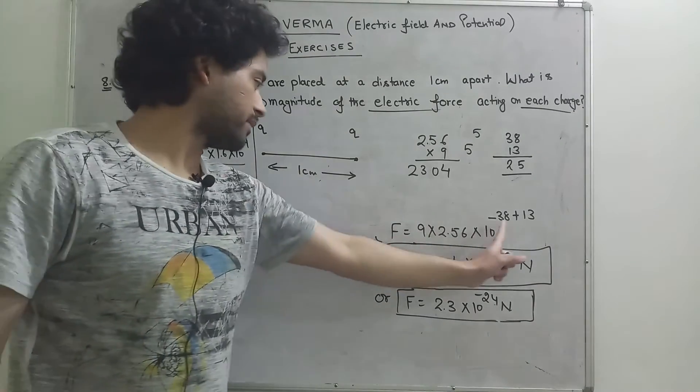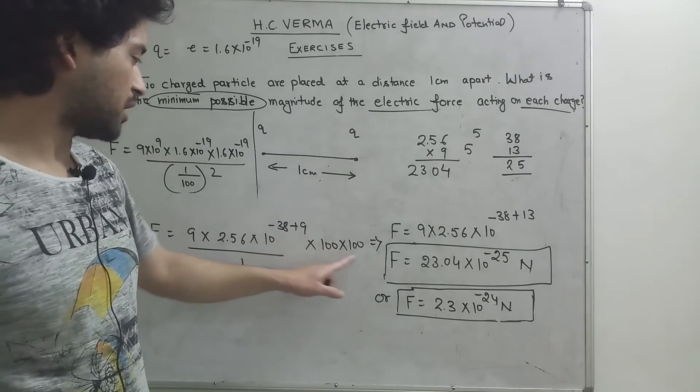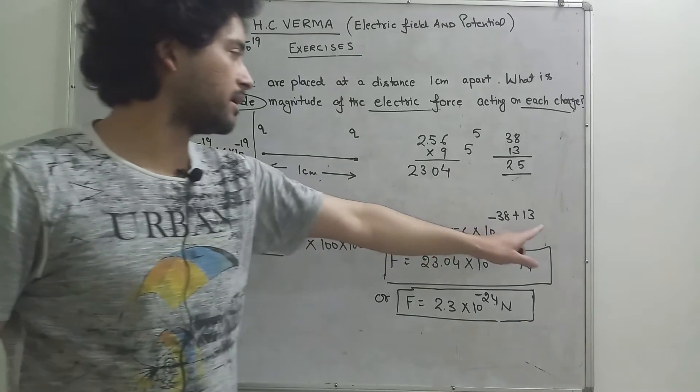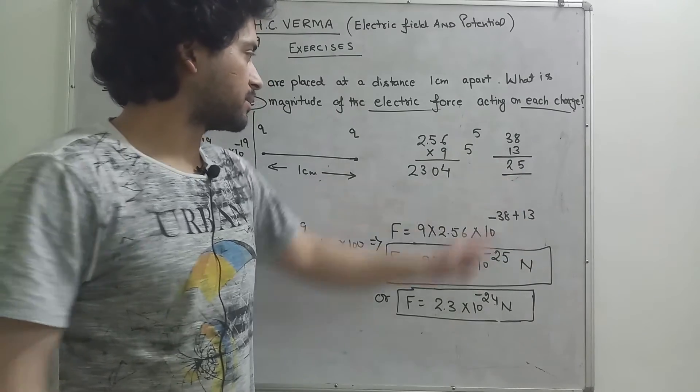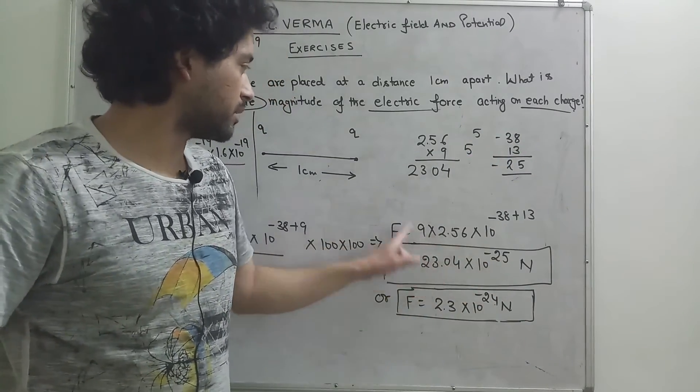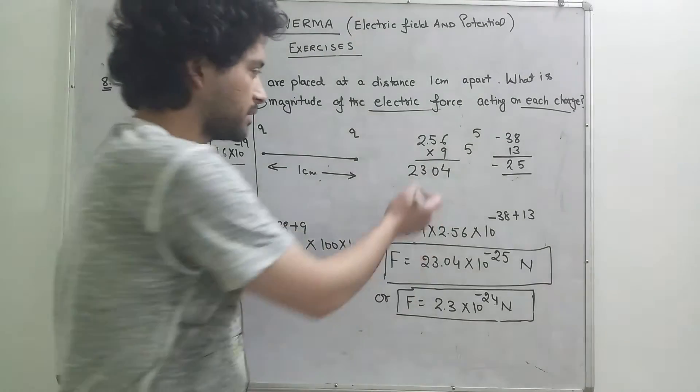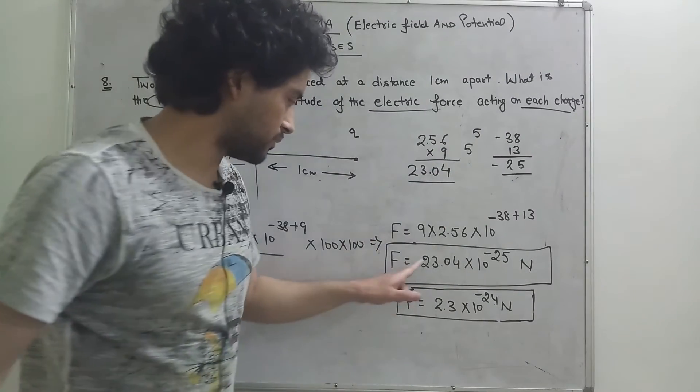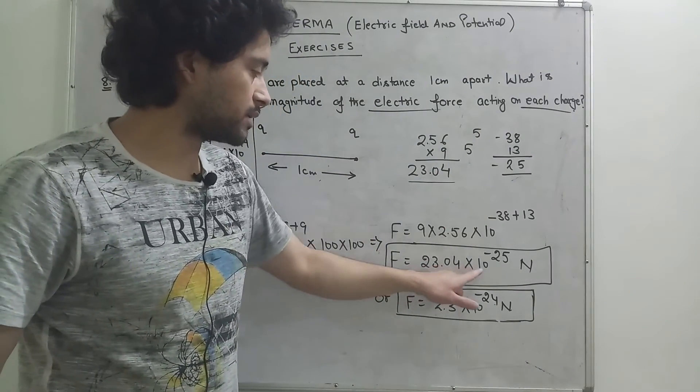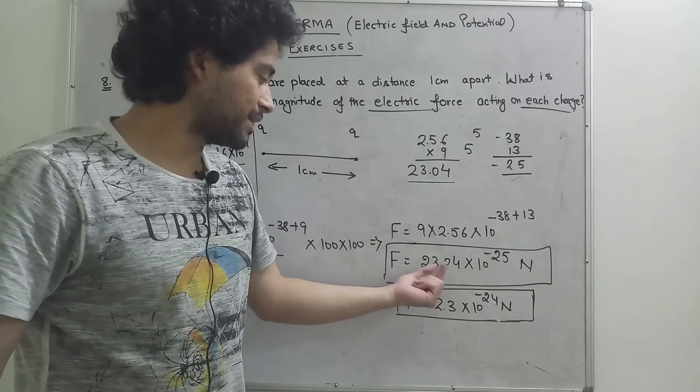This is going to be equal to 9 into 2.56, 10 raised to minus 38 plus 9. These values are minus 25. And this is going to multiply 2.304, it is 23.04. So 23.04 times 10 raised to minus 25 newton.